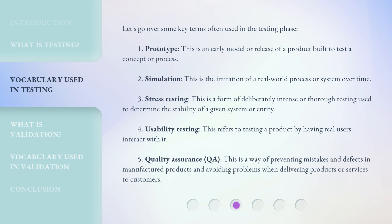4. Usability testing: This refers to testing a product by having real users interact with it. 5. Quality assurance (QA): This is a way of preventing mistakes and defects in manufactured products and avoiding problems when delivering products or services to customers.